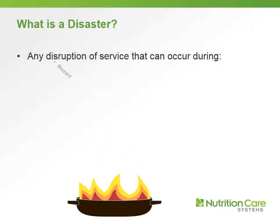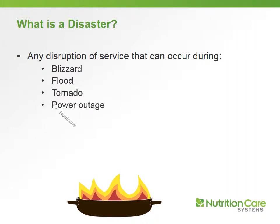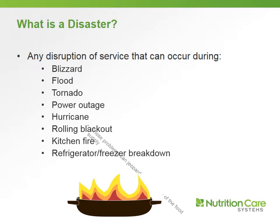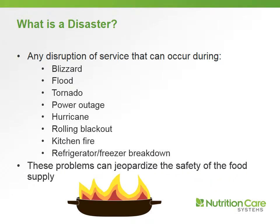Let's begin by talking about the definition of a disaster. A disaster is really any disruption of service that can occur during, for example, a blizzard — food trucks would have difficulty delivering food and employees have a very difficult time getting to work. Other examples include flood, tornado, power outage, hurricane, rolling blackout, kitchen fire, or a refrigerator or freezer breakdown. If your refrigerator or freezer breaks down, you have to have a backup plan to keep that food safe. These problems can jeopardize the overall safety of the food supply, and that's why we need to have disaster planning in place.